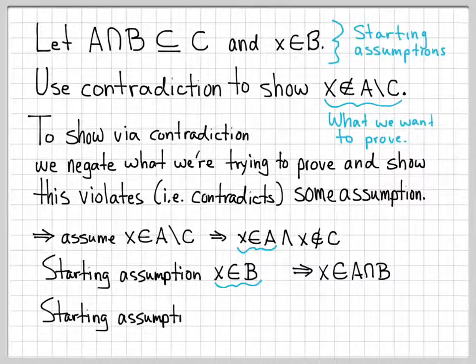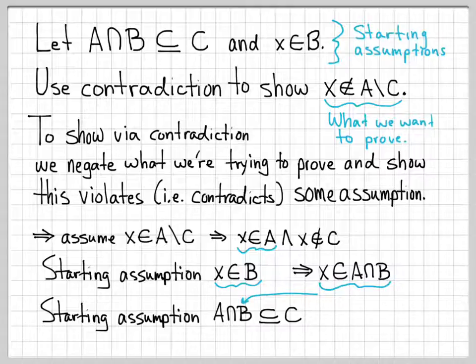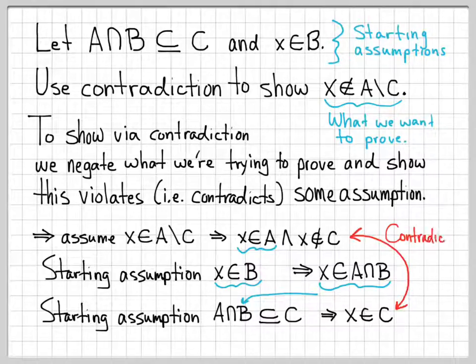Going back to one of our starting assumptions: A intersect B is a subset of C. So look what we just had — we have that X is in A intersect B, and A intersect B is a subset of C, so that means X has to be in C. So we've now deduced, using this starting assumption, that X is an element of C. But two lines ago we said X is not an element of C, and now we've deduced that X is an element of C.